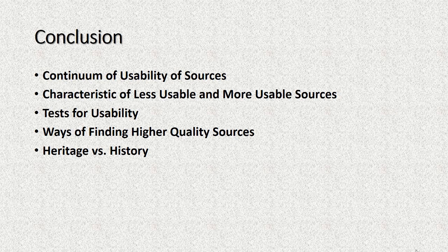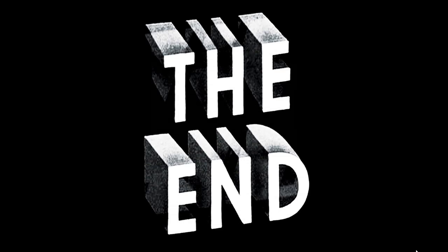In this video, we've examined the continuum of source usability, noting that sources are not merely good or bad, but more usable and less usable. We looked at characteristics of sources to evaluate their place on that continuum and thus their value to your research. We then covered practical tests for evaluating sources, followed by methods of finding out about authors and what other scholars think of existing books and articles. Finally, we discussed the problem of heritage and how to avoid sources that engage in it to the detriment of rigorous historical research. We also noted that heritage is not bad history, for it is not history at all. I hope you feel more confident in choosing higher quality secondary sources for your work now and in the future. This ends the lecture, and as always, thanks for your attention.